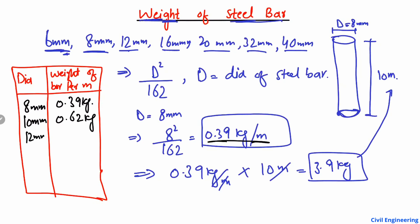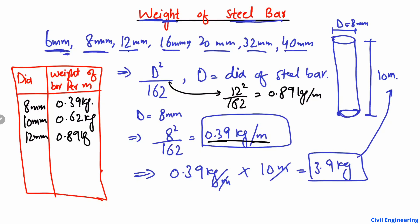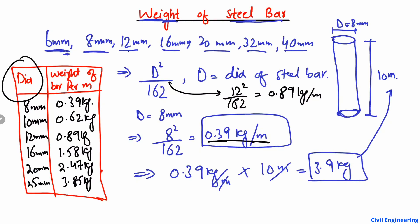For 12 millimeter bar, you just put the values in the formula — 12 squared divided by 162 — and you get 0.89 kg per meter. For 16 millimeter bar, we have 1.58 kg. For 20 millimeter bar, this value is 2.47 kg. And for 25 millimeter bar, we have 3.85 kg per meter.